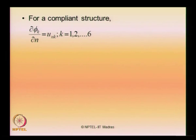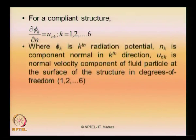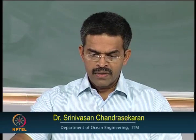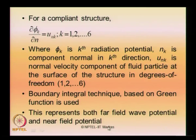Alternatively, for a compliant structure, you use an equation to compute the velocity potential, where phi_k is the k-th radiation potential, n_k is the component normal in the k-th direction, and u_n_k is the normal velocity component of the fluid particle at the surface of the structure, where k refers to different degrees of freedom. The boundary integral technique based on Green's function is used to evaluate this, representing both the far field and near field wave potential. This is true for compliant structures.